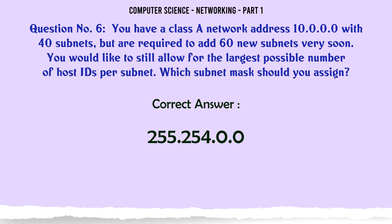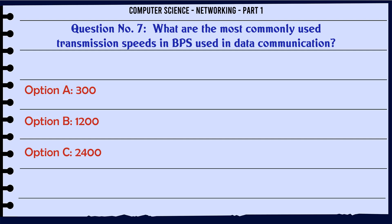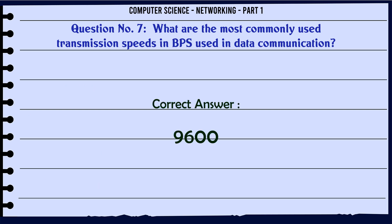What are the most commonly used transmission speeds in BPS used in data communication? A. 300. B. 1200. C. 2,400. D. 9,600. The correct answer is: 9,600.